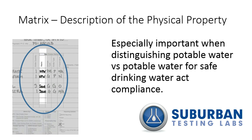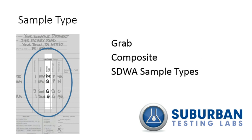Next, let's talk about the Matrix section. You'll notice there is a Matrix key at the bottom of the Chain of Custody form. The Matrix is a description of the physical property of the sample. This is especially important when distinguishing between potable water and water that must be analyzed for compliance with the Safe Drinking Water Act, which also indicates to the lab that results must be reported to the respective state authority. Sample type is also very important in communicating public water supply sampling, and this is another space that's often overlooked but is essential.